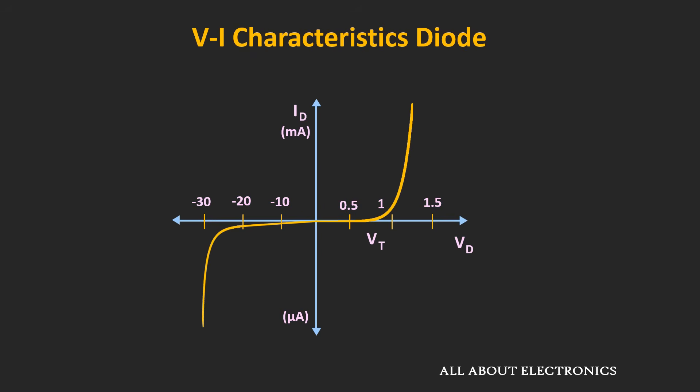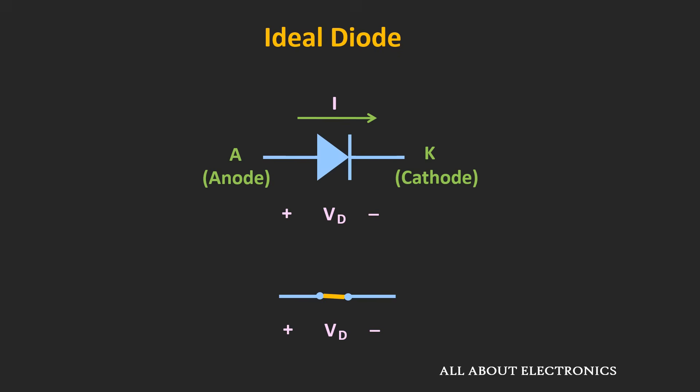First, we will consider this diode as an ideal diode and see its VI characteristic and equivalent circuit. Then step by step, we will introduce more parameters to this ideal diode to approximate the real diode characteristic curve. For the ideal diode, whenever the voltage applied between the anode and cathode is positive, it will simply act as a closed switch. On the other hand, if the voltage applied is negative, it will simply act as an open switch.